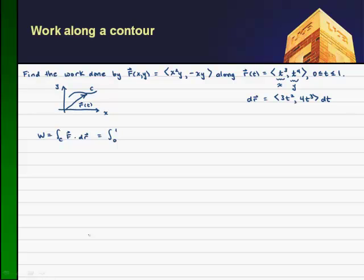And my force, again, I have x squared y, so you get t cubed for x. You get t cubed squared. When I raise the power to the power, I multiply the exponents. So I get t to the 6th times y, which is t to the 4th comma.